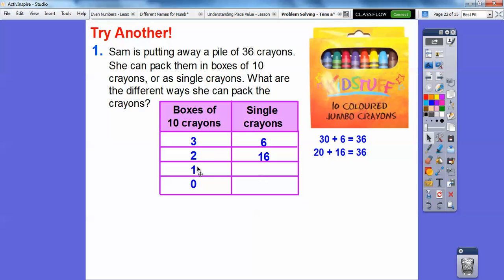So when we decrease this by 1 box, that's decreasing it by 10. So we're going to add 10 to that. So 16 plus 10 is 26. Decrease this by 10. So if we add 10 more to that, that's going to give us 36 crayons.